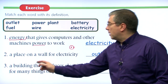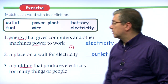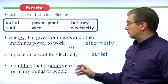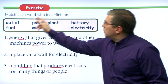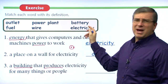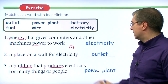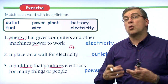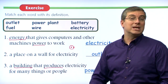Number three: a building that produces or makes electricity for many things or people. A power plant is a building. Our building is a power plant that produces or makes electricity for many things we use.